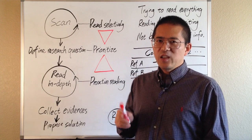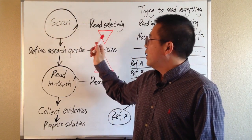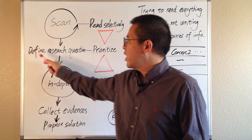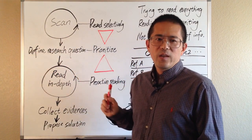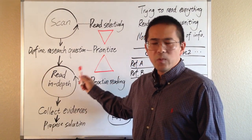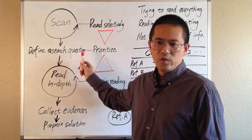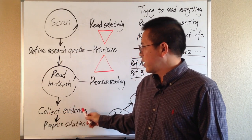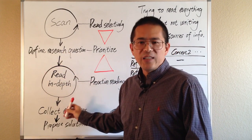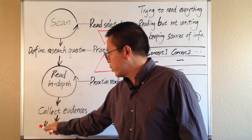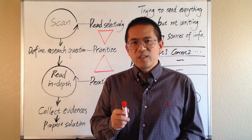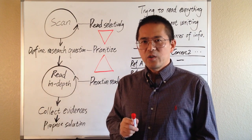Let's take another look at these two cycles. In the first cycle, you accumulate knowledge for the general problem you try to solve, and as a result, you will be able to define a specific research question. After the first cycle, you know what to read. In the second cycle, you accumulate knowledge for the defined research question — you collect current evidence available in the literature to answer that specific question. As a result, you will be able to identify your chance to contribute, propose your own solution, develop your own idea and argument. After the second cycle, you know what to write.